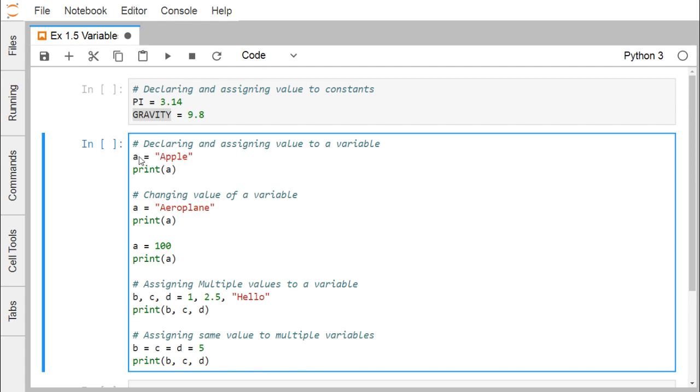a = 'apple', so now a is a variable. As apple is of the type text or string, a will be of the type string here. Print(a) so a will get printed.